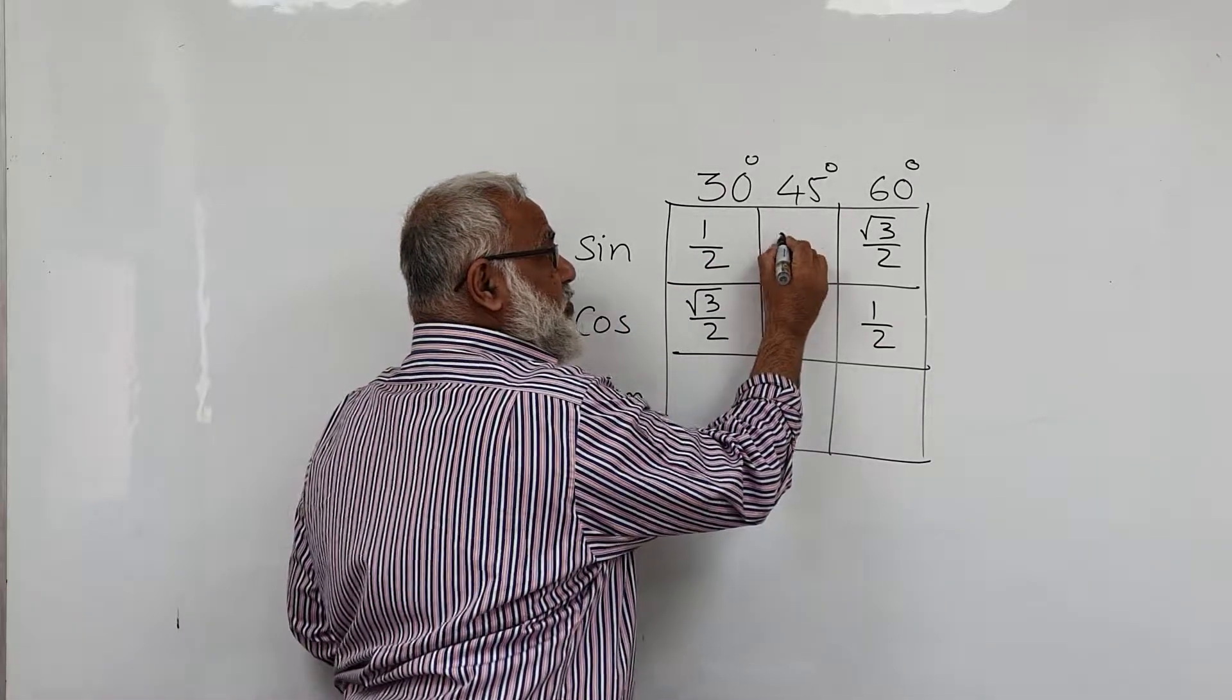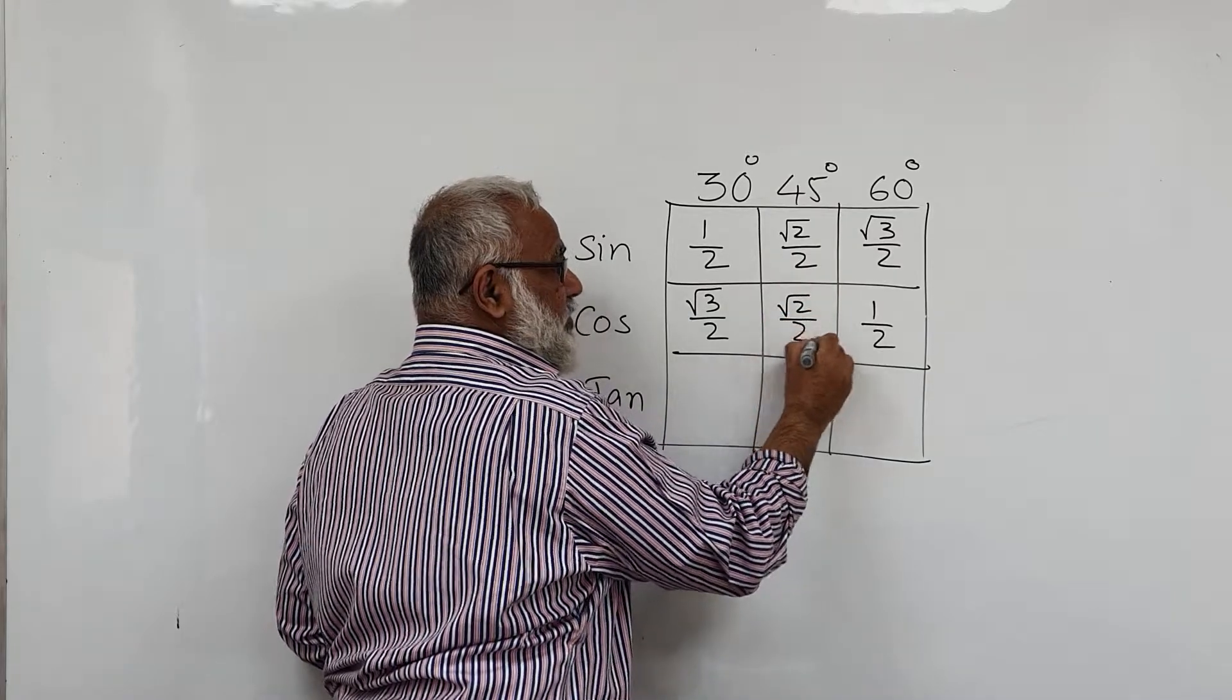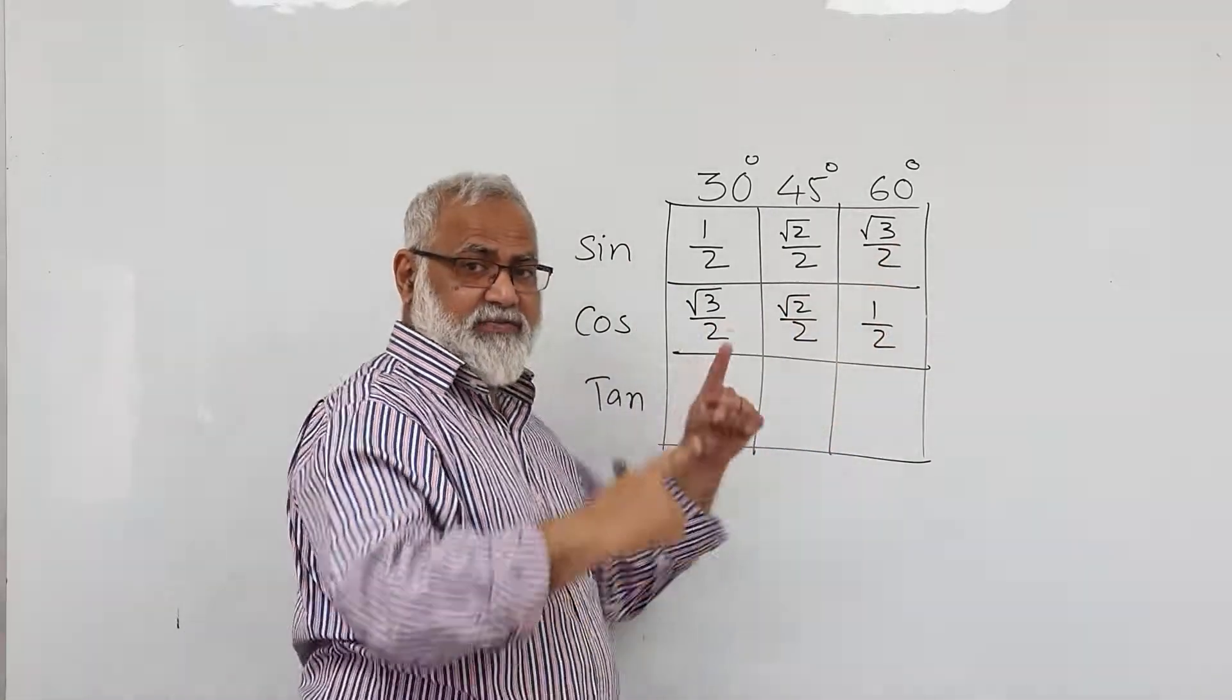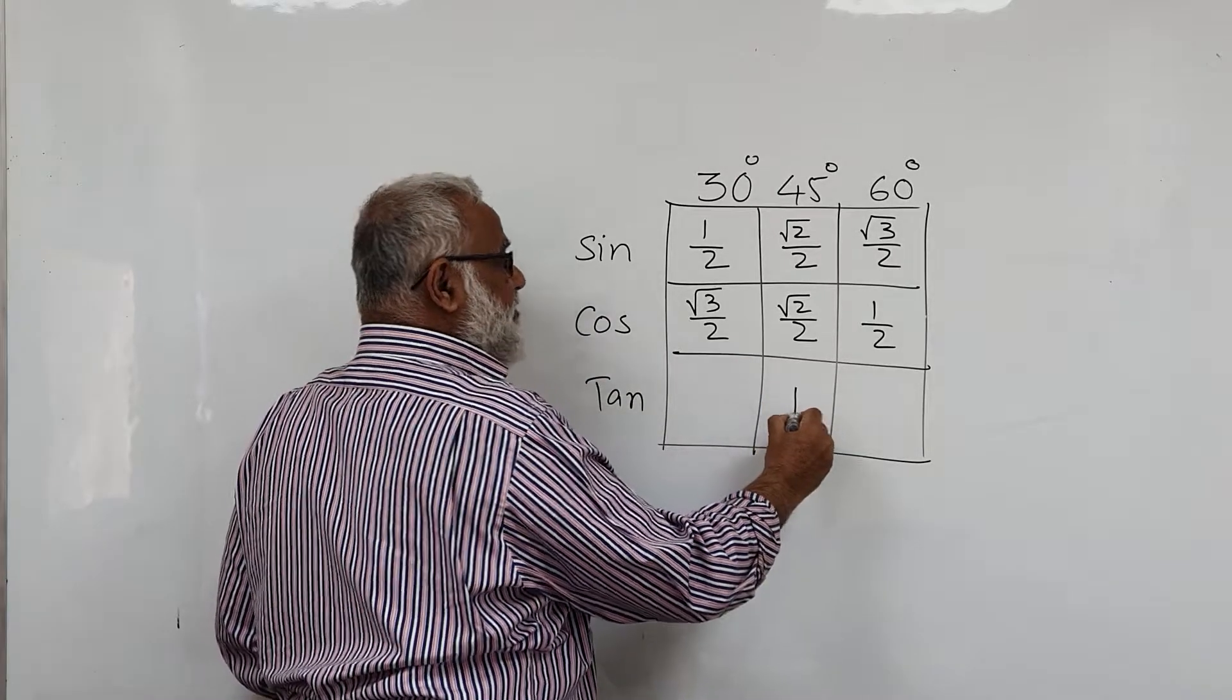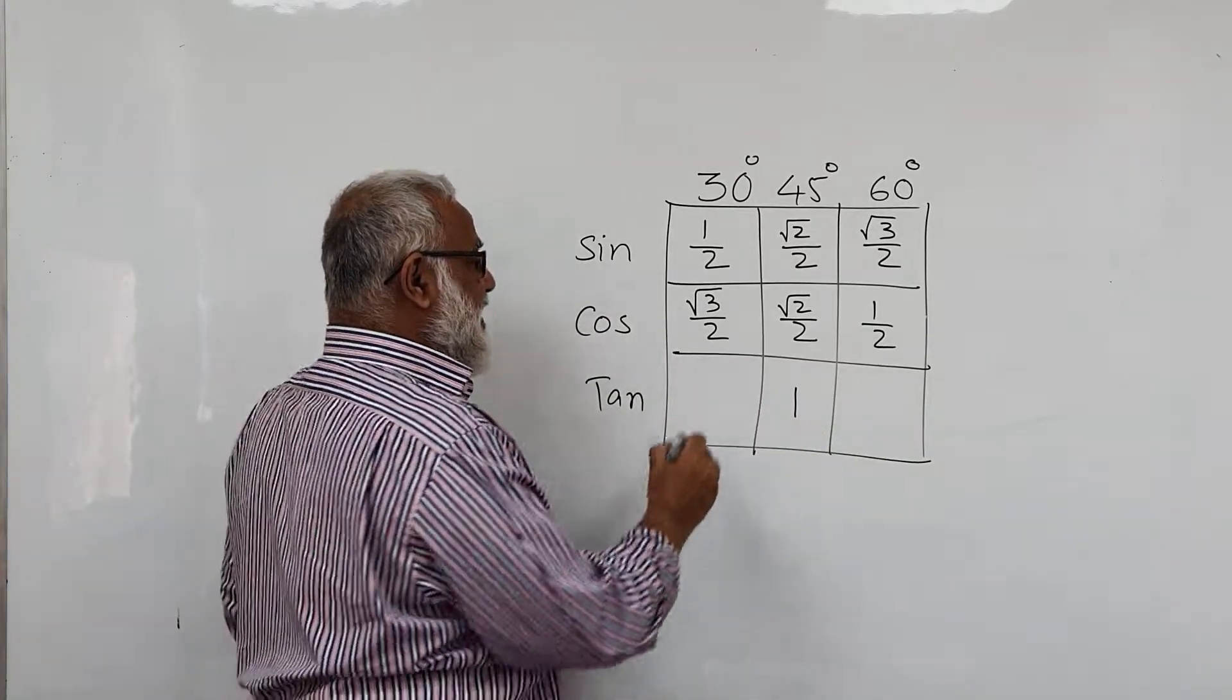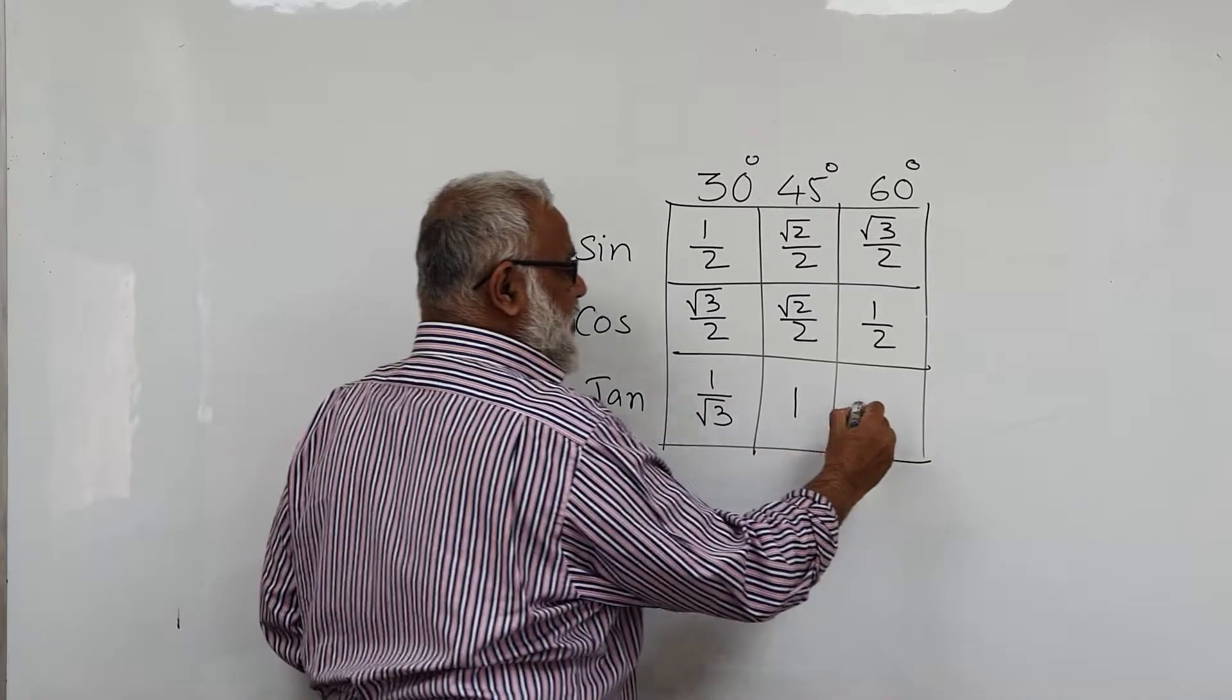Sine 45 is root 2 over 2, and so is cosine 45, root 2 over 2. So in this way you can remember: tangent 45 is 1, tangent 30 is 1 over root 3, and tangent 60 is root 3.